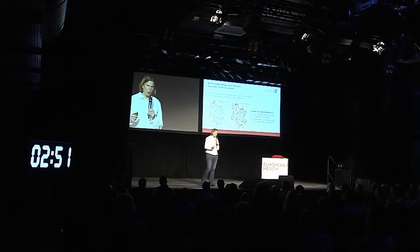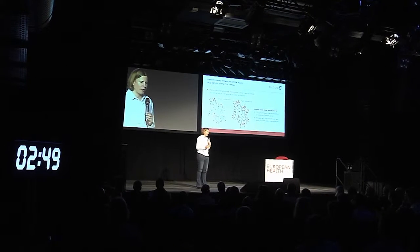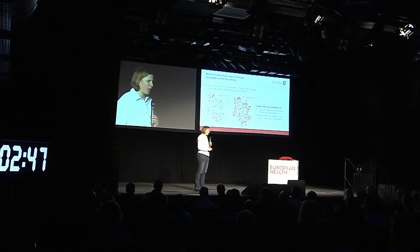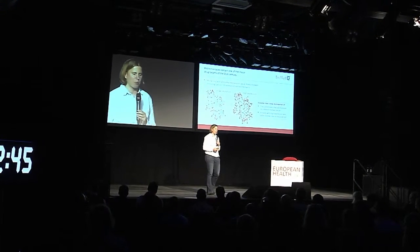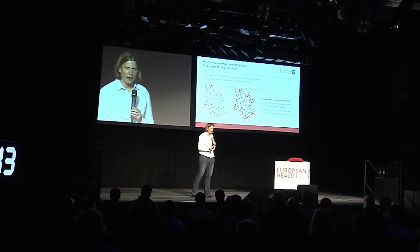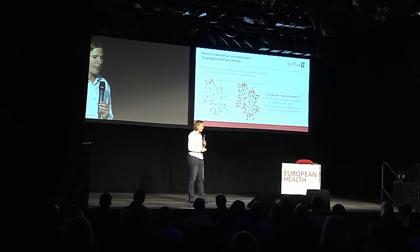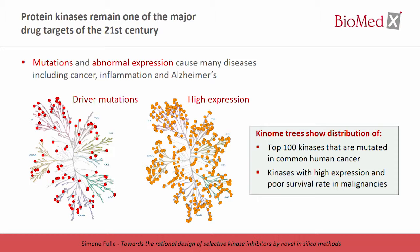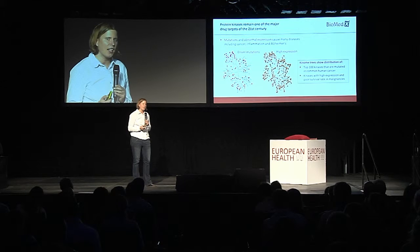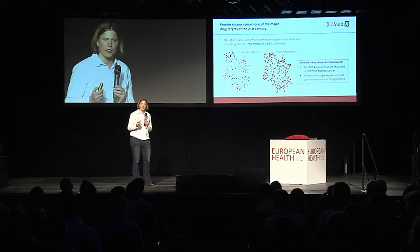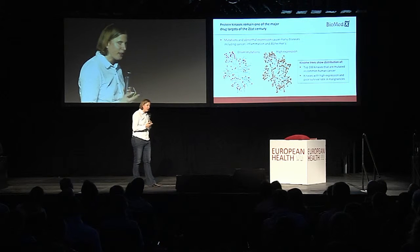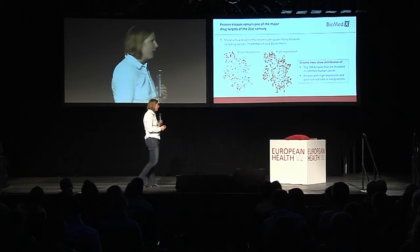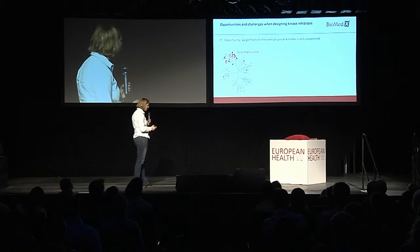You are probably all aware that kinases are established drug targets. Mutations and abnormal expressions of kinases cause many diseases — that's especially true for cancer, but also for other diseases such as inflammation and Alzheimer's. I believe they will remain one of the major drug targets in the next years, as shown on this and the next slide. What you can see here is a phylogeny tree of the human kinome.